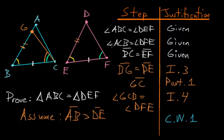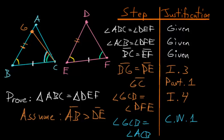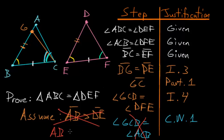But angle GCB equaling angle ACB is impossible, because by Common Notion 5 the whole is always greater than the part — angle GCB is just a part of angle ACB, so it cannot equal it. This contradiction means our assumption cannot be true: AB cannot be bigger than DE.